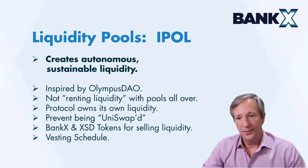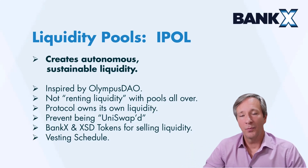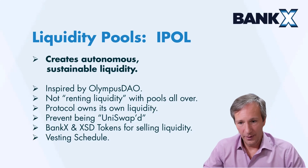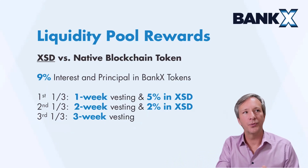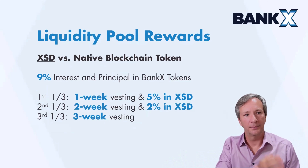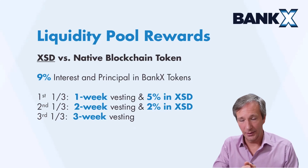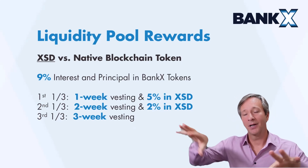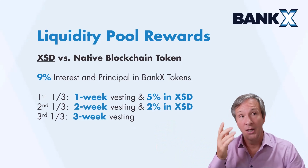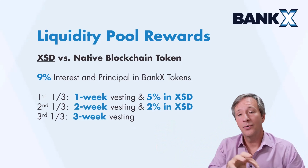For selling liquidity, you get rewards in BankX and XSD over a vesting schedule. We have three pools: two pools for trading — XSD paired against the native blockchain token, and the BankX utility token paired against the native blockchain token — and then a collateral pool. We give the most incentive for selling liquidity into the XSD pool, then the BankX pool, and then the collateral pool.